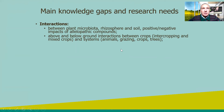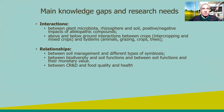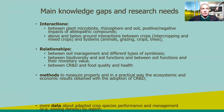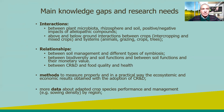Regarding main knowledge gaps and research needs, we acknowledged the need to study interactions between plant microbiota, the rhizosphere, and soil — including positive and negative impacts of allelochemical compounds — and below- and above-ground interactions between crops, intercropping, mixed crop systems, animal grazing, crops, and trees. We also need to study relationships between soil management and different types of symbiosis, between biodiversity and soil function, between soil function and its monetary value, and between crop rotation, diversification, food quality, and health. New methods are needed to properly measure the systemic and economic results of adopting crop rotation and diversification, and more data on crop species performance and management — such as sow density — in every region.